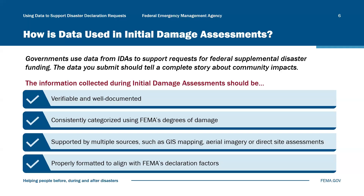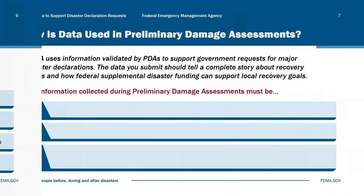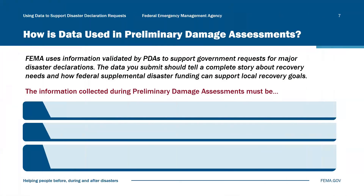This request can be made using the PDA request letter template located on FEMA's preliminary damage assessment website. FEMA uses the preliminary damage assessment process, or PDA, to validate the data submitted as part of the state, tribal nation, and/or territory's request by checking the accuracy of the information. The joint PDA team — made up of federal, state, tribal nation, and/or territory representatives — reviews the data together. The validated data is then used to support government requests for disaster declarations.